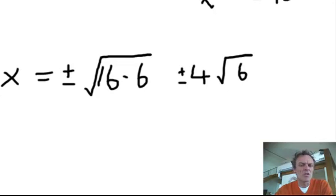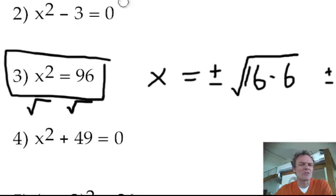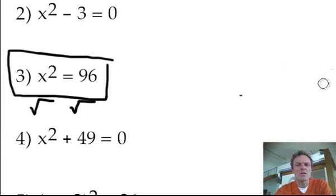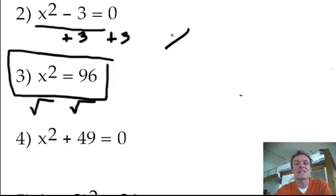Now then, how about some other ones where you've actually got to do a bit of algebra. So let me just erase some of this. I'll just leave that one at the top. Now have a look at this one. For this one, if you add 3 to both sides, all you get is x squared equals 3.